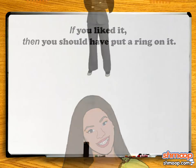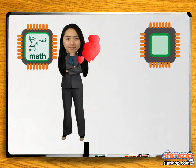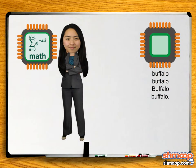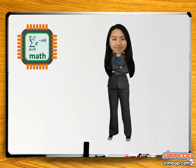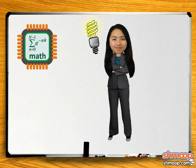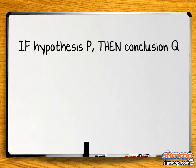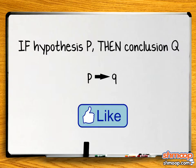Of course, mathematicians prefer numbers and symbols to long and complicated sentences, so they came up with a way of representing conditional statements differently. The statement 'if hypothesis P, then conclusion Q' can be represented by drawing an arrow from P to Q, like this.